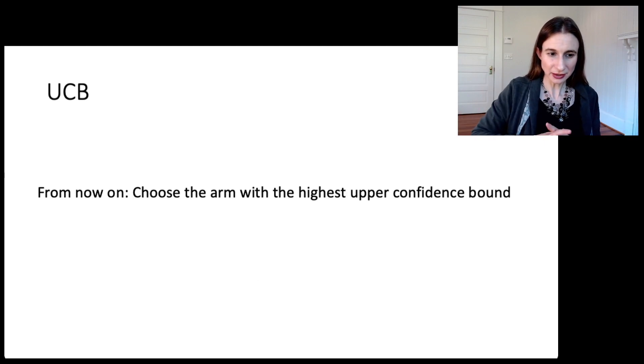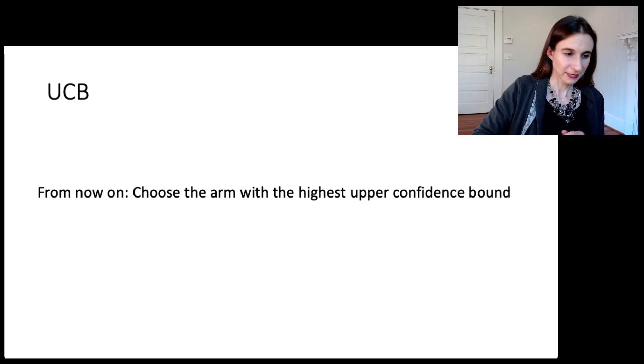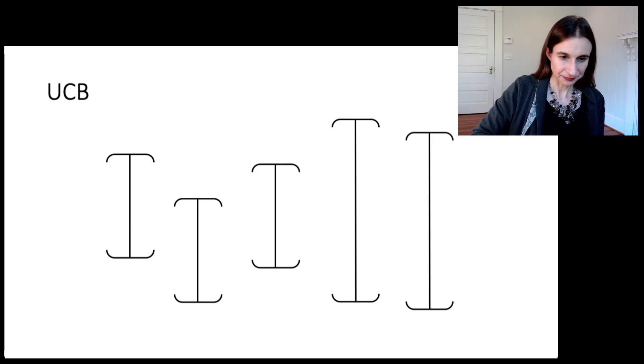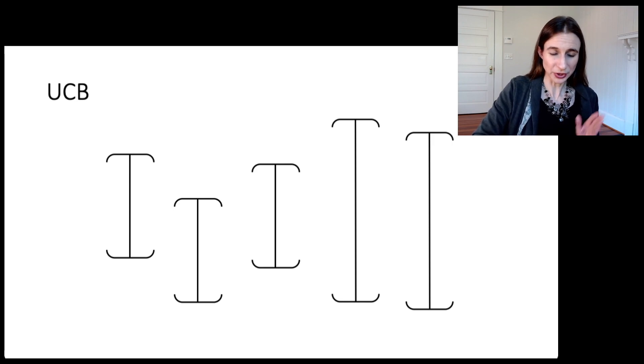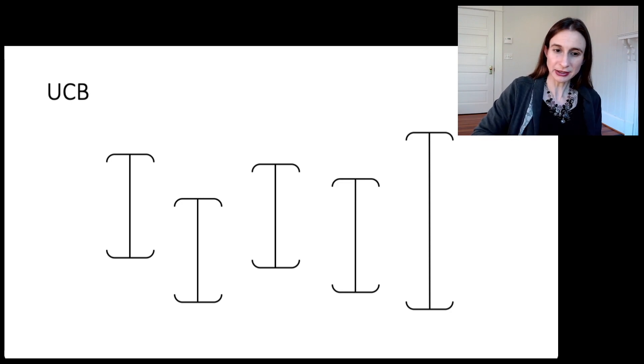And then for the rest of the algorithm, we simply choose the arm with the highest upper confidence bound. This is the whole algorithm. So let's do it. The arm with the highest upper confidence bound is arm four. That's the arm that could potentially be the best because it has the highest upper confidence bound. So we pick that arm and we learn something about it and its confidence interval shrinks.